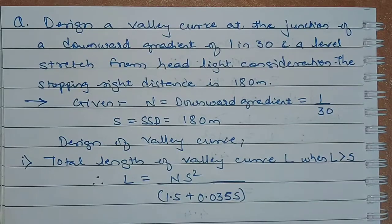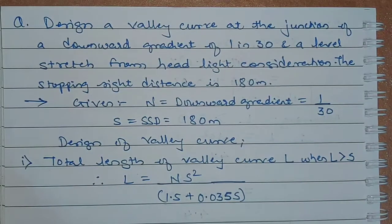Design a valley curve at the junction of a downward gradient of 1 in 30 and a level stretch from headlight consideration. The stopping sight distance is 180 meters.